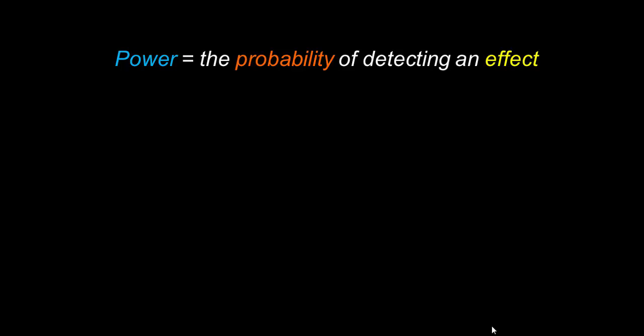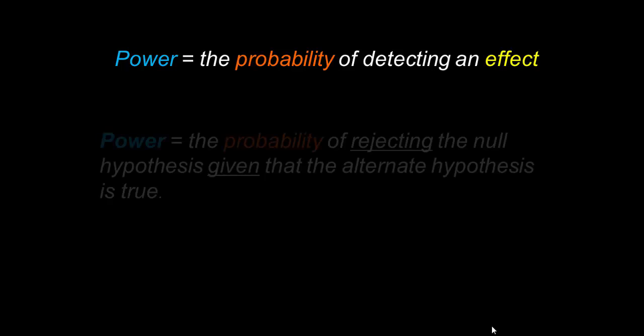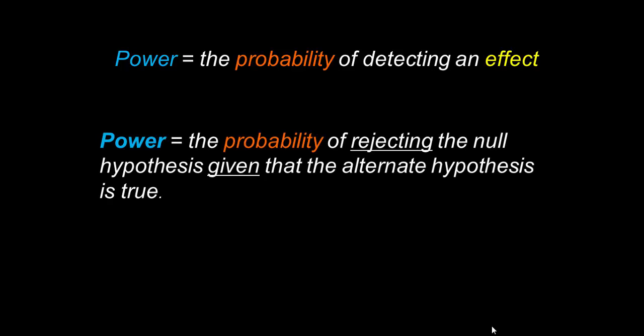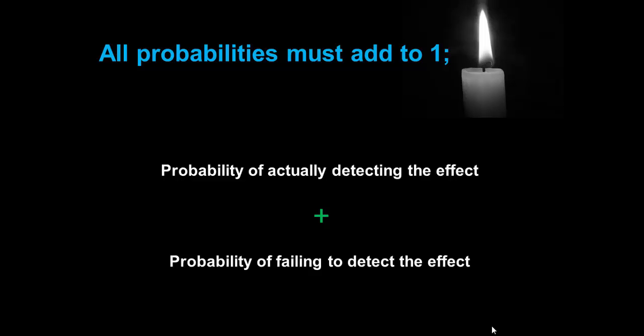So we've already established that power is the probability of detecting an effect. So now we can re-express that as power is the probability of rejecting that null hypothesis, given that the alternative hypothesis is true. In other words, there is a real effect out there. So we now need to disprove the null hypothesis. Now in geek speak, in math land, they often like to couch things mathematically. So here it is expressed as a conditional probability. Power is the probability of rejecting H0 given that HA is true. Now think back to school days. When we learned about probability, we learned that all probabilities must add up to one. So here we can say the probability of actually detecting the effect, plus the probability of failing to detect the effect, must equal to one.